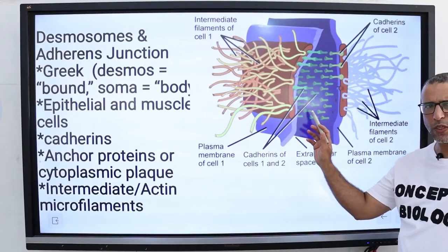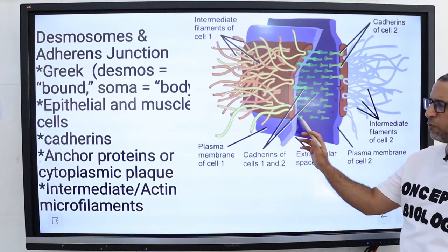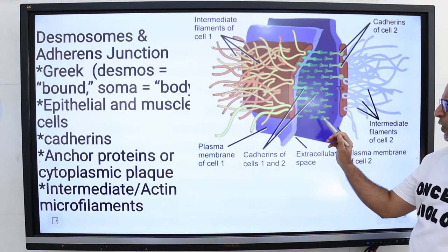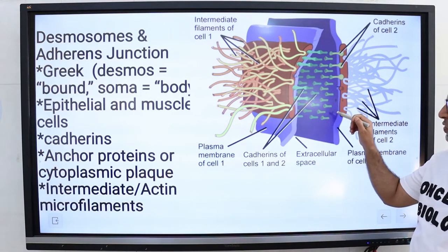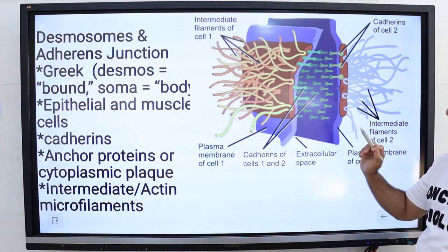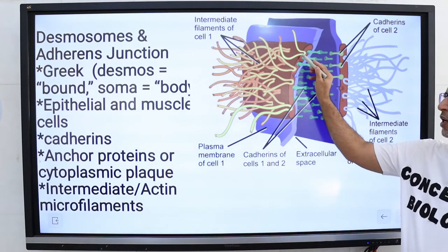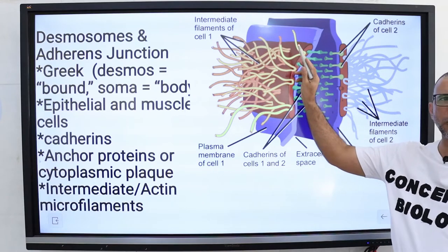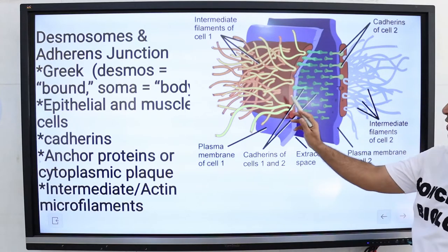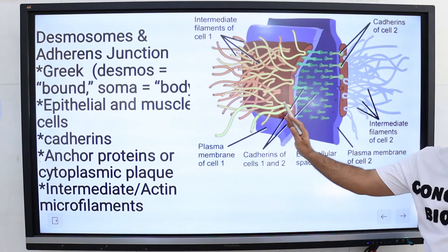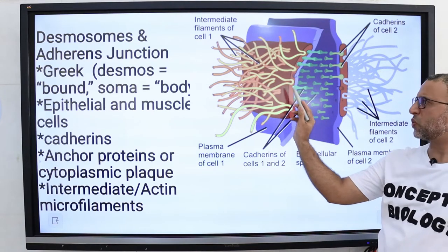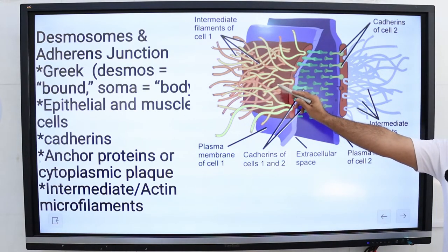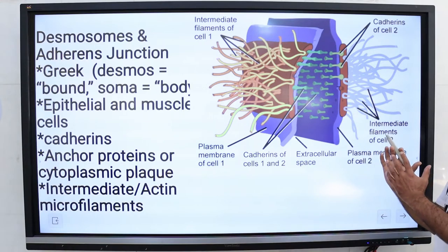Cadherins interact in the space between them, holding the two membranes together. Each cell's cadherin molecule contains a tail that inserts itself into the respective cell. Inside the cell, the cadherin tail attaches to a disc of dense protein structure called cytoplasmic plaque, which is red in the image. This cytoplasmic plaque connects to the cell's internal skeletal framework, intermediate microfilaments, and helps anchor the junction.